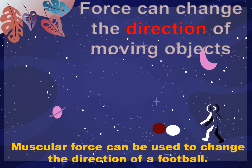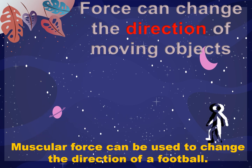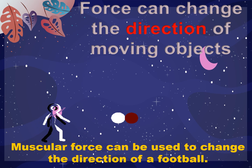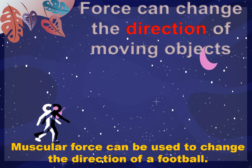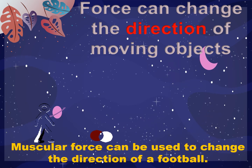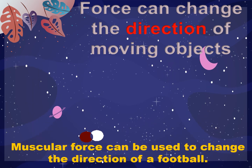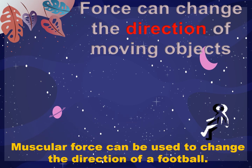Another effect of force is that it can change the direction of a moving object. Muscular force can be used to change the direction of a football. Passing a football during a game of soccer changes the direction of motion — the force is provided by muscular force. When a baseball is hit, the muscular force in our hand is exerted on the ball through the bat. The direction of a moving car can also be changed by applying force on the steering wheel, which is connected to the wheels of the car. Force can change the direction of moving objects.